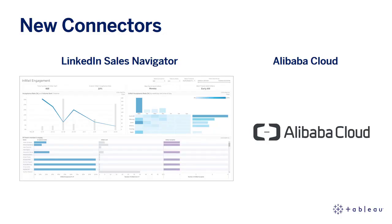First up are the LinkedIn Sales Navigator and Alibaba Cloud Connectors. Gain deeper insights from your Sales Navigator application platform data. Connect to and analyze this data in Tableau, enabling your sales operations users to merge, analyze, and visualize social selling data alongside their other sales performance reports.